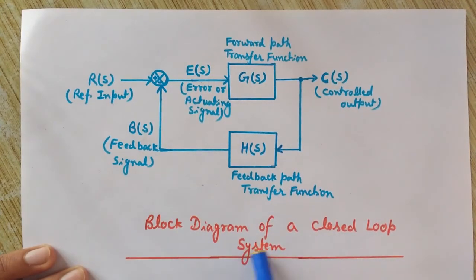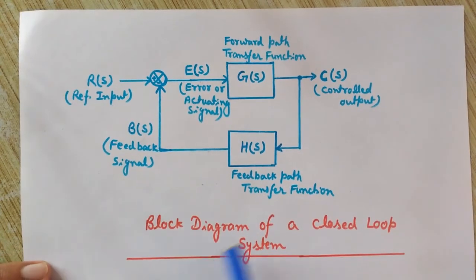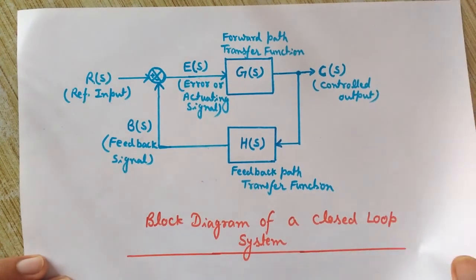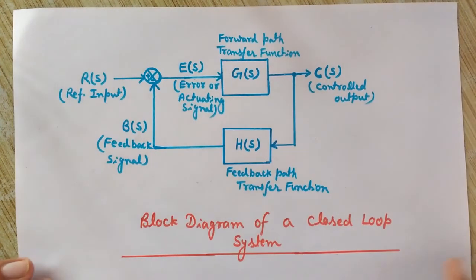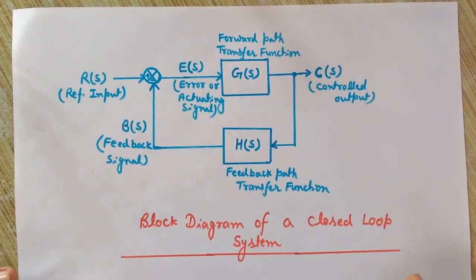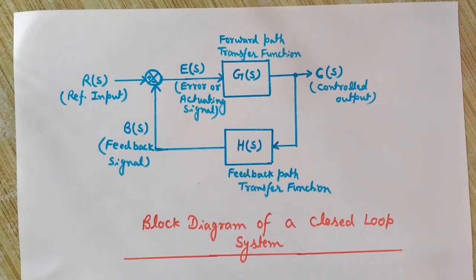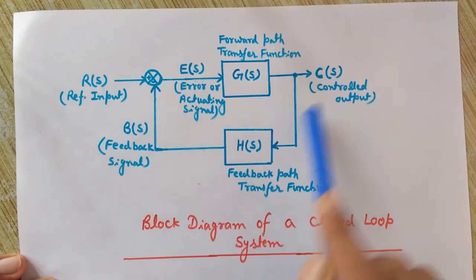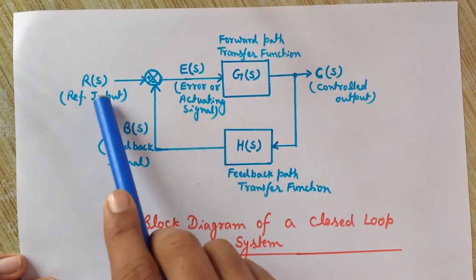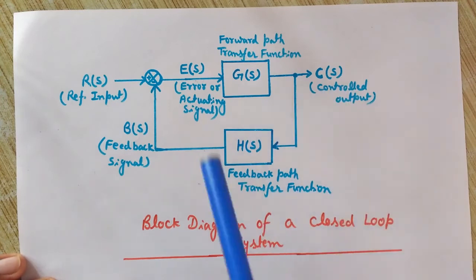This is the block diagram of a closed loop control system. We discussed the open loop and closed loop systems and how to denote the transfer functions, inputs, and outputs.